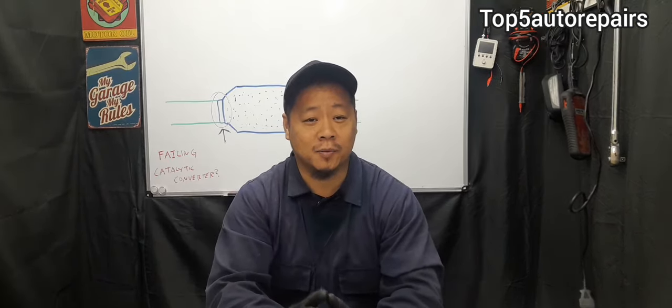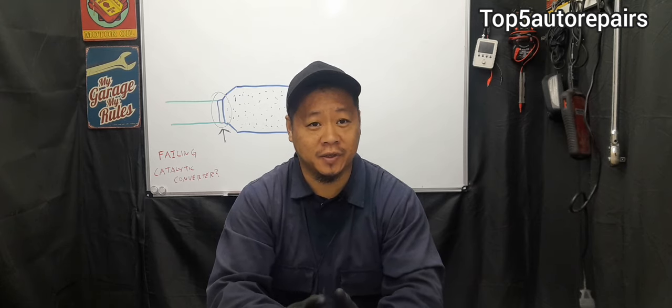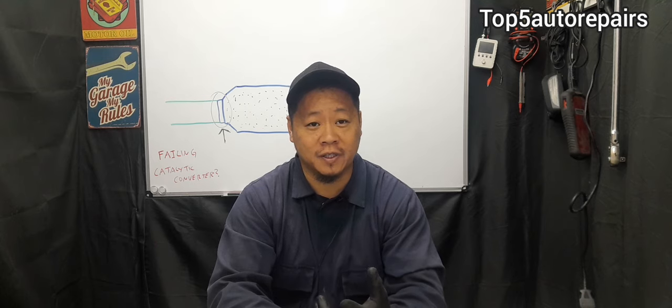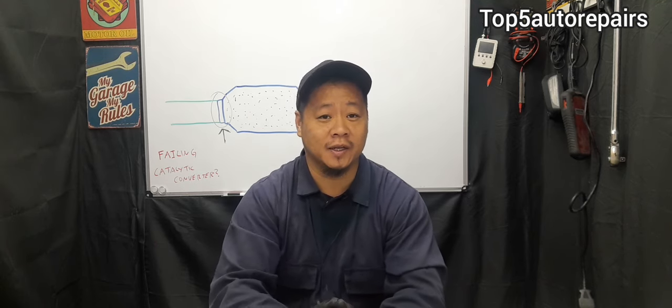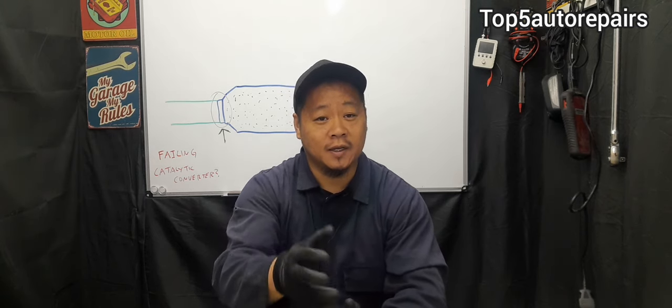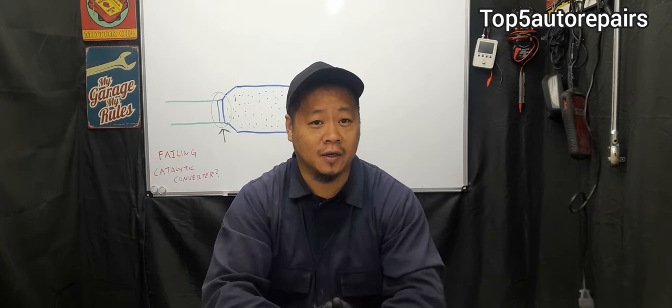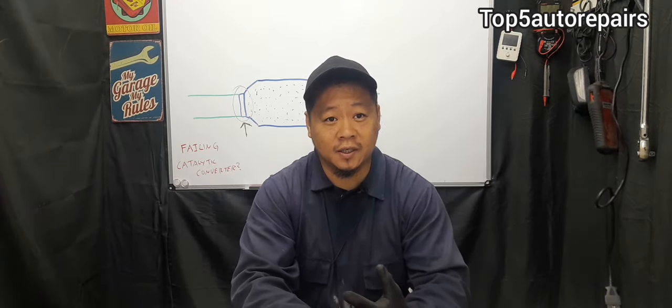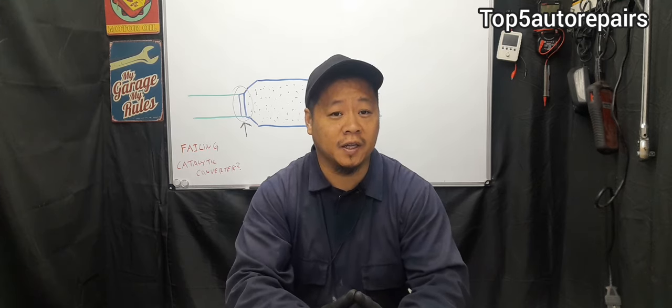The next common cause is going to be some sort of contamination entering the exhaust system. For example, if oil or antifreeze finds its way into the exhaust system due to maybe some sort of engine problem, that's going to cause your catalytic converter to prematurely fail. The next common problem is going to be a very rich condition or a lean condition caused by a failing oxygen sensor.